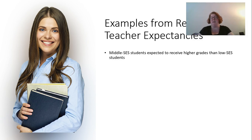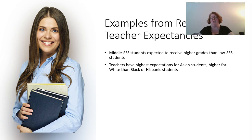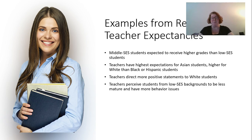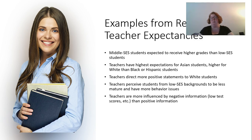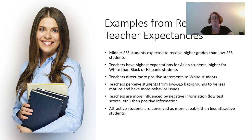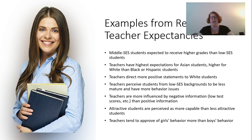Teachers direct more positive statements to white students — while negative statements stay the same — meaning white students tend to get more praise relative to the negative statements they receive. Teachers perceive low SES backgrounds as less mature with more behavior issues, and they're more influenced by negative information than positive, so once that cycle of low expectations starts, it tends to spiral downward. Also, students who are more attractive tend to be perceived as more capable, and attractiveness is related to SES — being able to afford nice clothes, dental care, and time for grooming. Teachers also tend to approve of girls' behavior more than boys', which leads to those expectational differences.